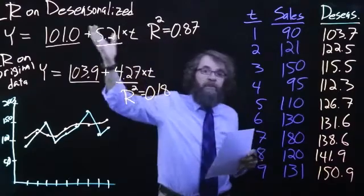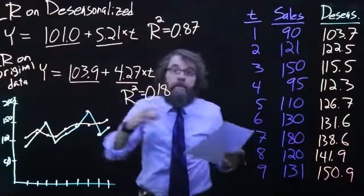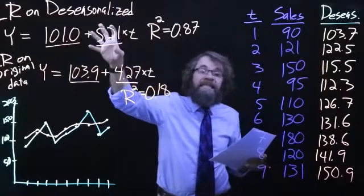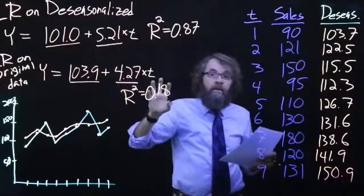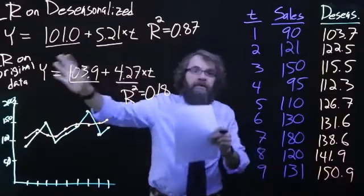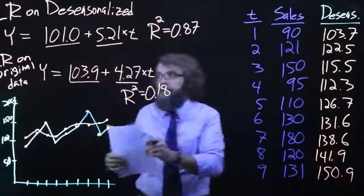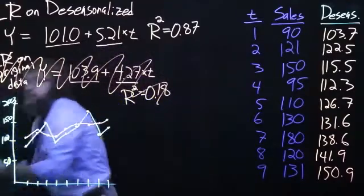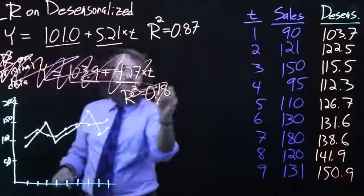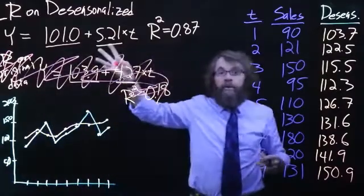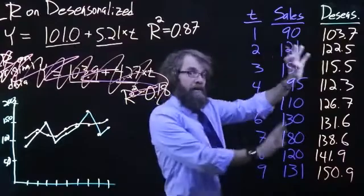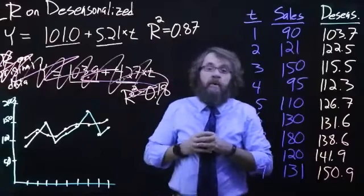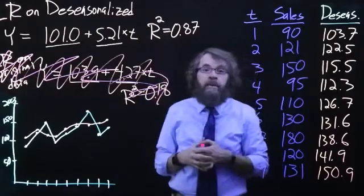Does that mean this data is four and a half times better? I wouldn't go that far, but I have a lot more confidence in this linear regression that I got from the de-seasonalized data compared to the one that we would have gotten if you would have done this. And you shouldn't do this. Ignore this. Do not do this. Here's my red marker. Do not do a linear regression on the original data. Do your linear regression on the de-seasonalized data. That's the whole point of computing the de-seasonalized data. We'll get a linear regression that we have a lot more confidence in because the r-squared value is so much higher.